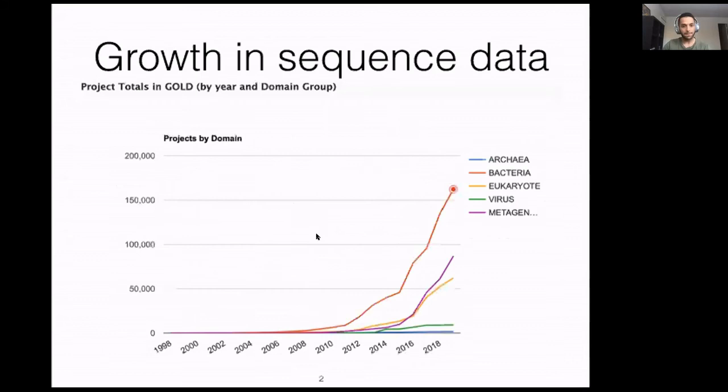The dramatic reduction in the cost of sequencing has made genome sequencing affordable to many people and many labs. This led to an explosive growth of sequence data of genes or whole genomes on public repositories.